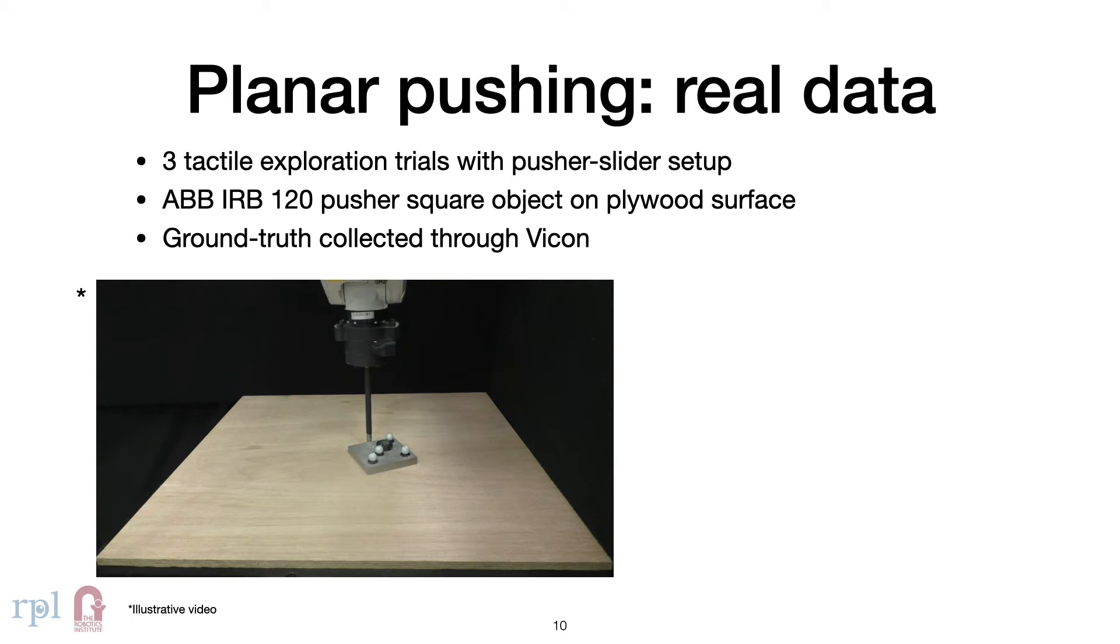In the real world, we use a single pusher to move around a square object. This is conducted on a plywood surface with Vicon tracking for ground truth.